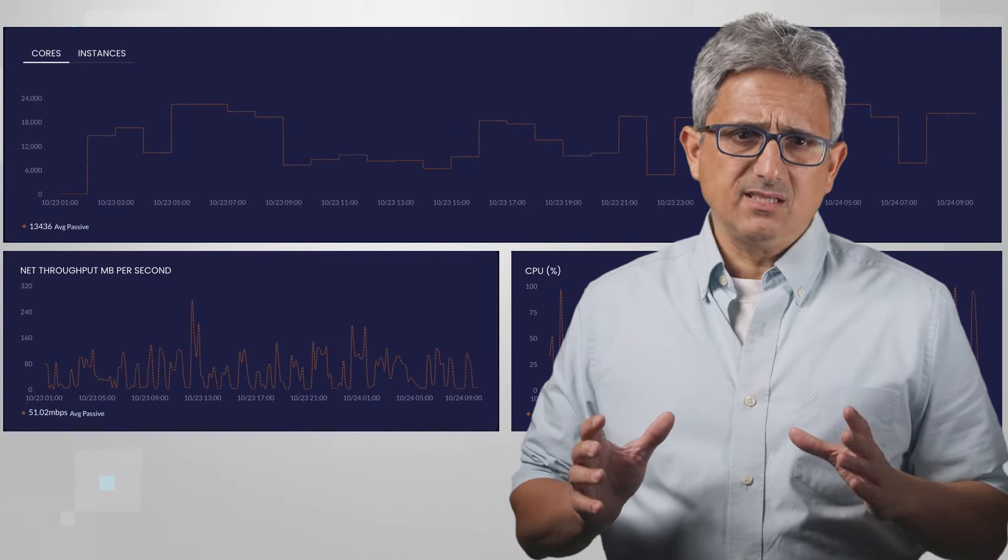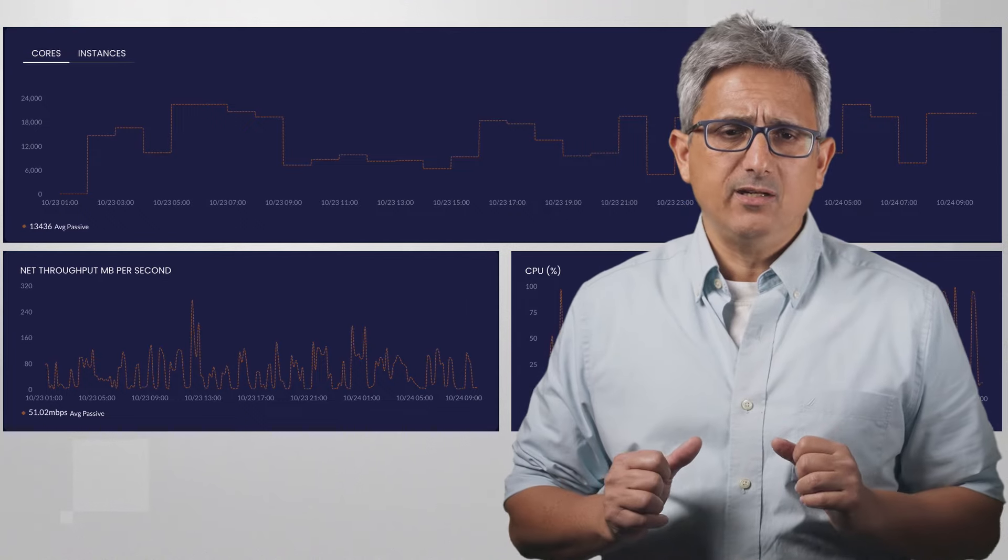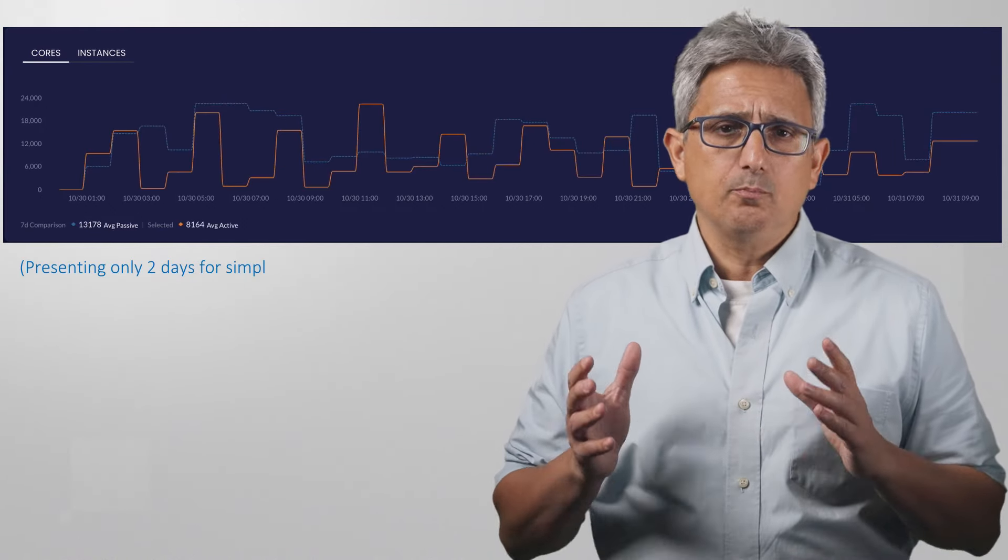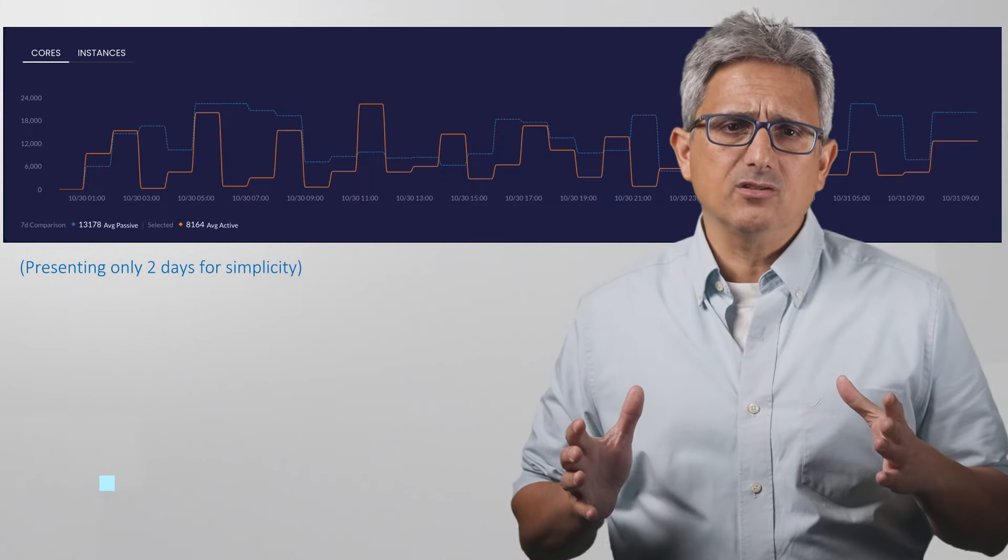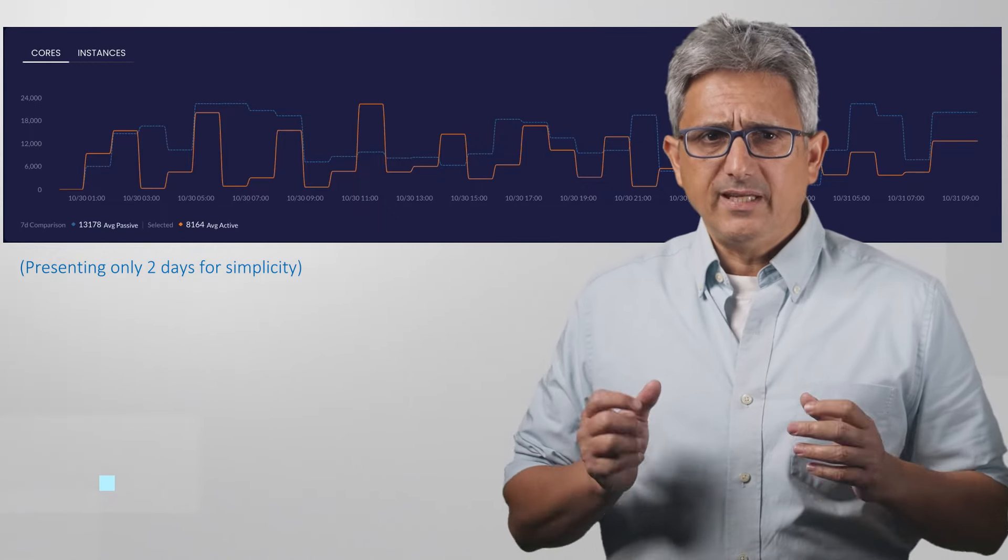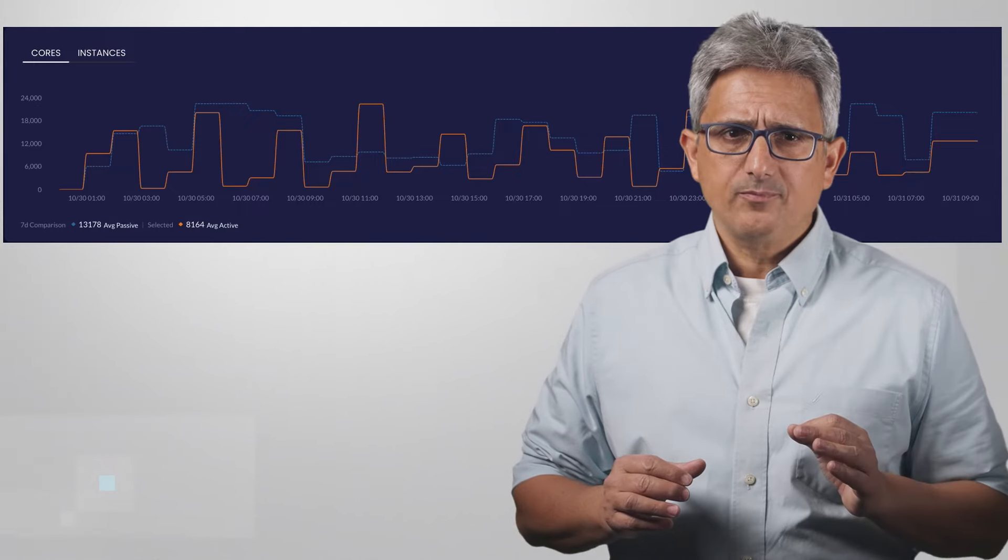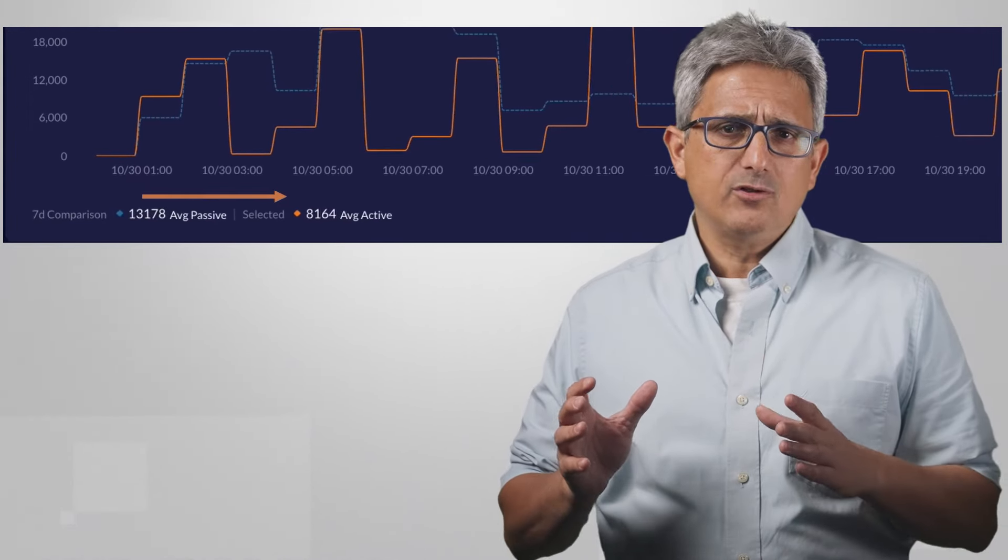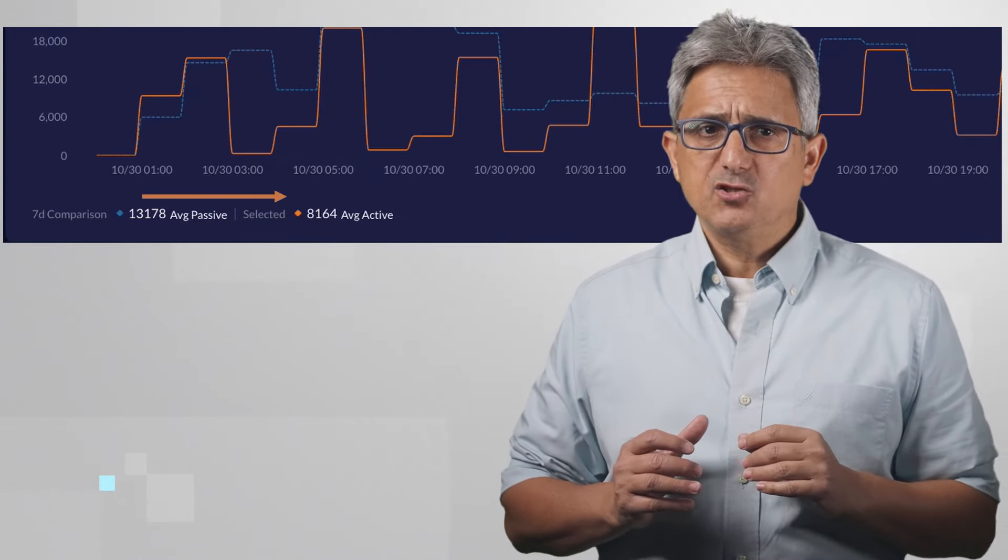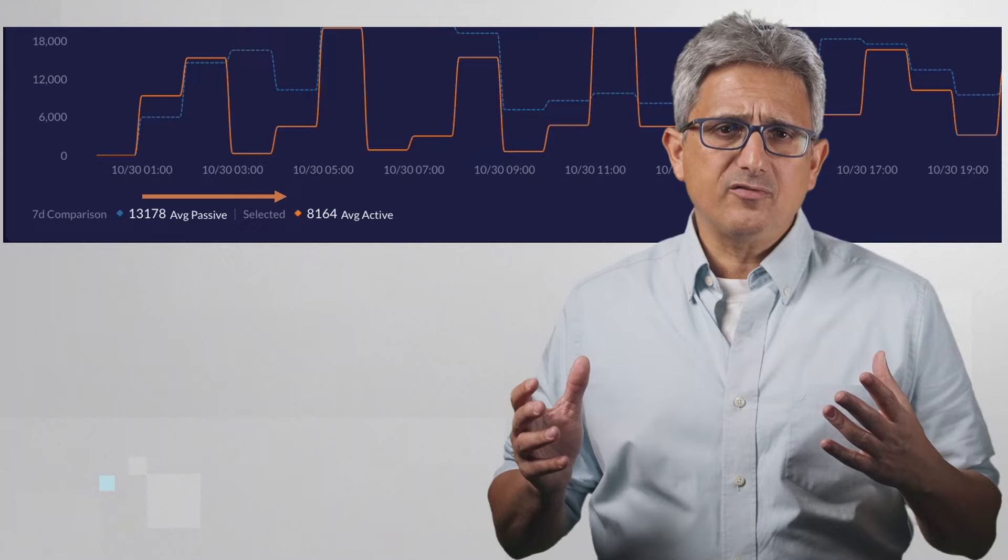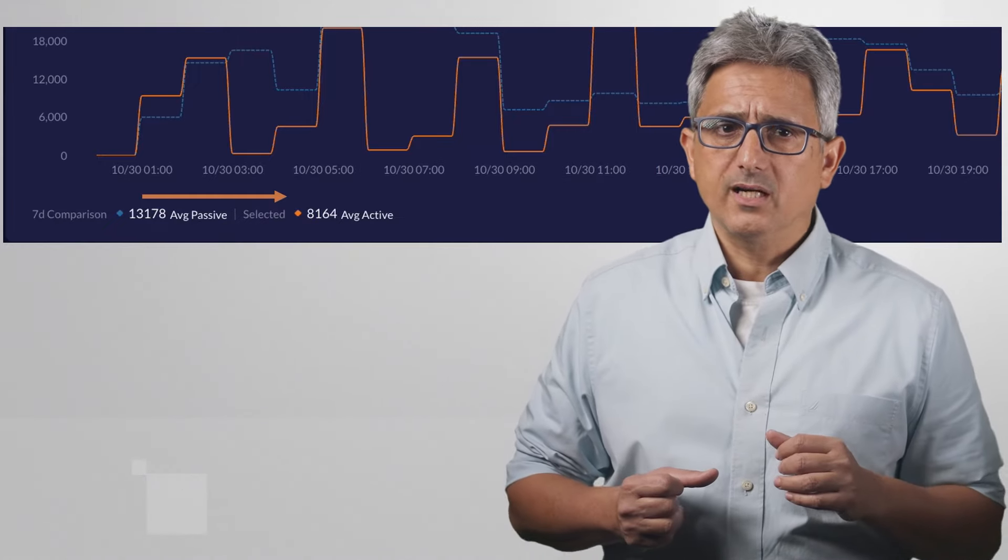And then, when you take the same system and apply the Granulate management, here for example a comparison of seven days execution, the utilization has changed. Take a look at the orange graph. We improved from an average of 13,000 cores to only 8,000 with the Granulate management. This is about 35% reduction in core count.